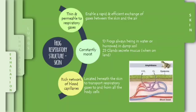The second one is the frog's skin is constantly moist. There are two ways for the frog to maintain the moisture of the skin. The first one is the frog always being in water or burrowing in damp soil. The second one is the glands which secrete mucus on the surface of the skin. This happens when the frog is on dry land. The third one is the frog's skin is richly supplied with a network of blood capillaries. The capillaries are located beneath the frog's skin. Its function is to transport the respiratory gases to and from all the body cells.